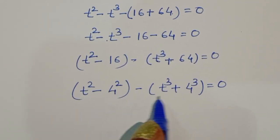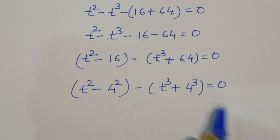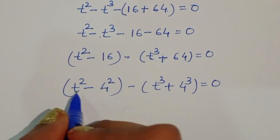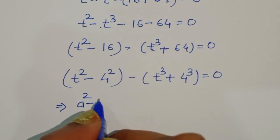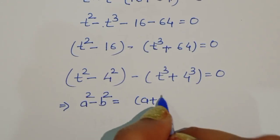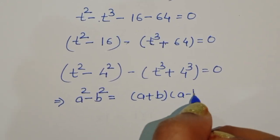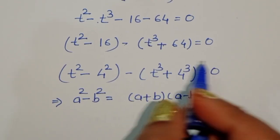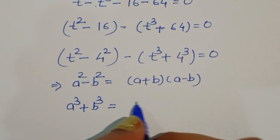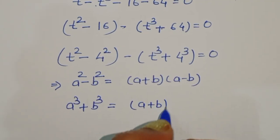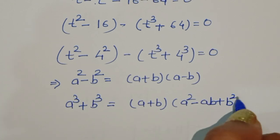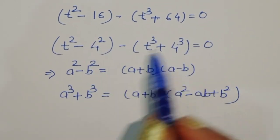Now we have t squared minus 4 squared, which is a square form, and minus t cubed plus 4 cubed, which is a cube form. We know the formula: a squared minus b squared equals (a plus b)(a minus b), and a cubed plus b cubed equals (a plus b)(a squared minus ab plus b squared). We will apply these formulas here.